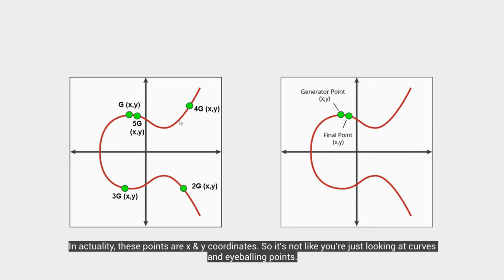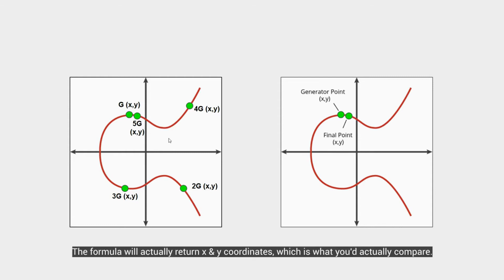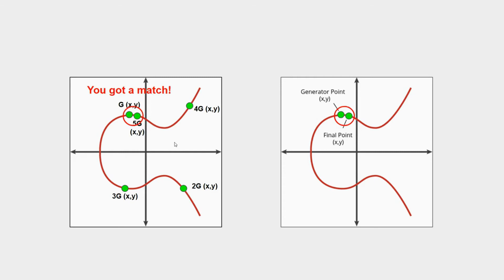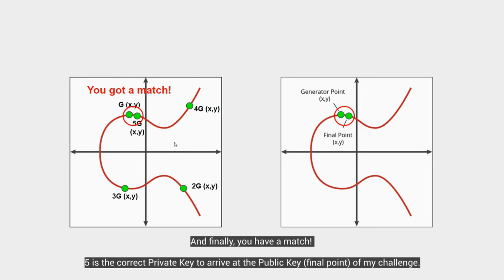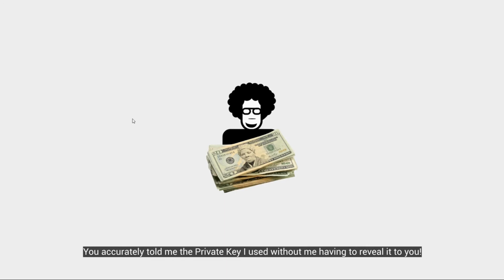So it's not really that you would be just looking at the curve and eyeballing it to say, hey, is that point the same point? Is it close? No, the formula will actually return x and y coordinates. And that's what you would really compare. In this case, you got a match. 5 is the right private key. So I would then give you the money and say, congratulations for being an elliptic curve expert. You won the competition. You accurately told me what private key I used without me having to tell you what the private key was.